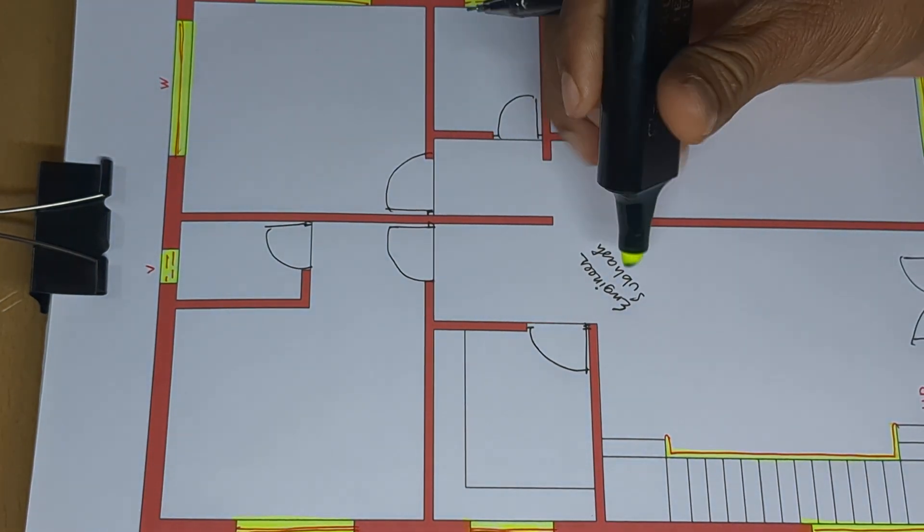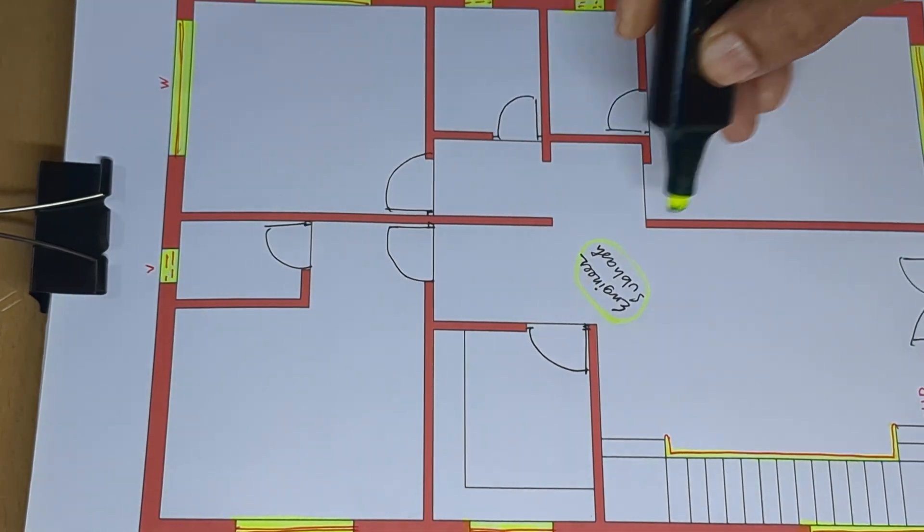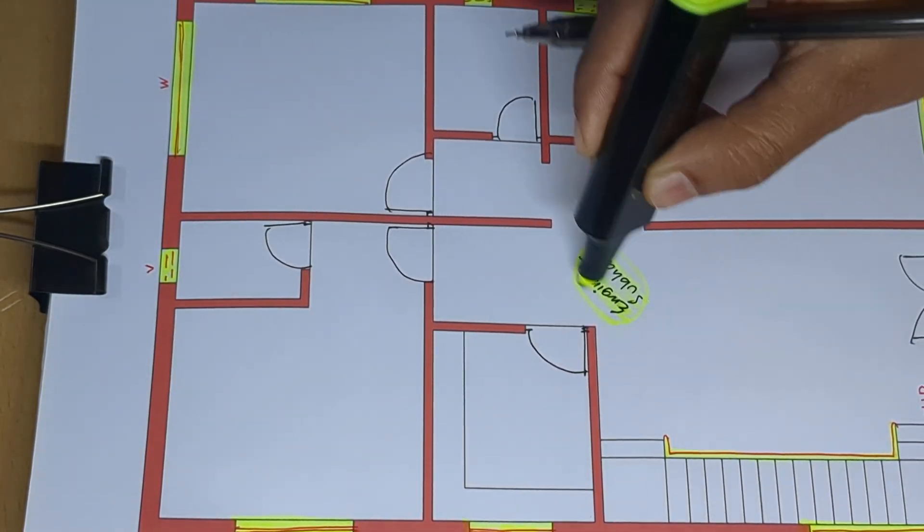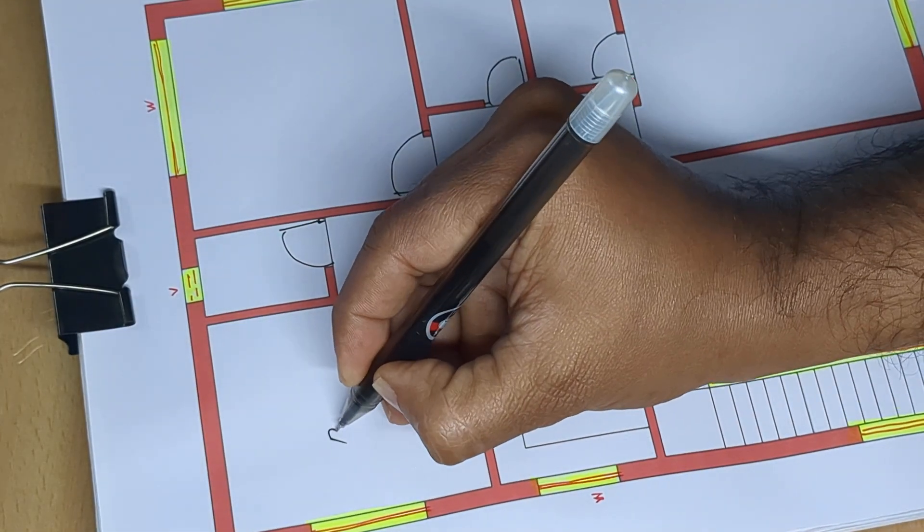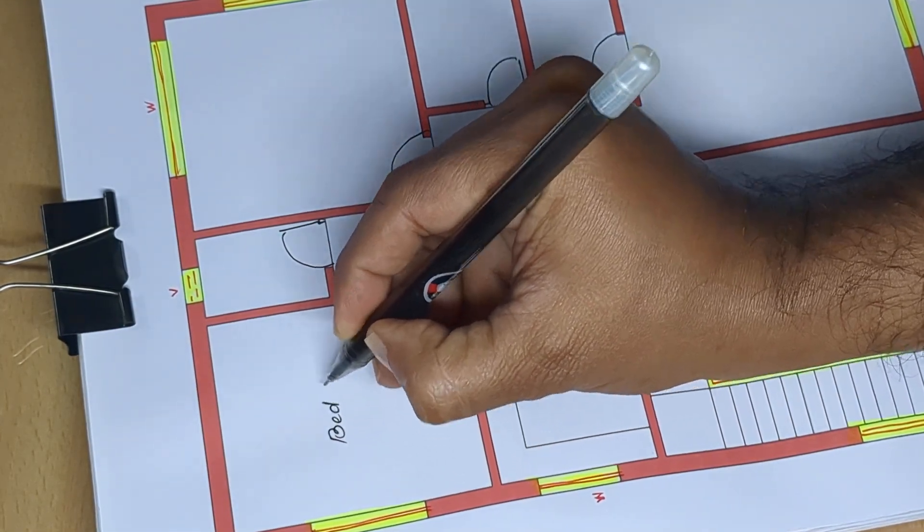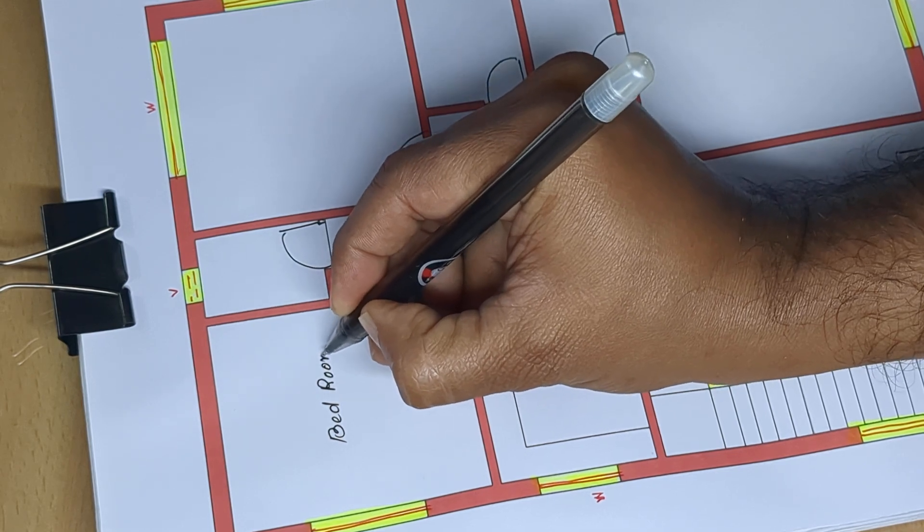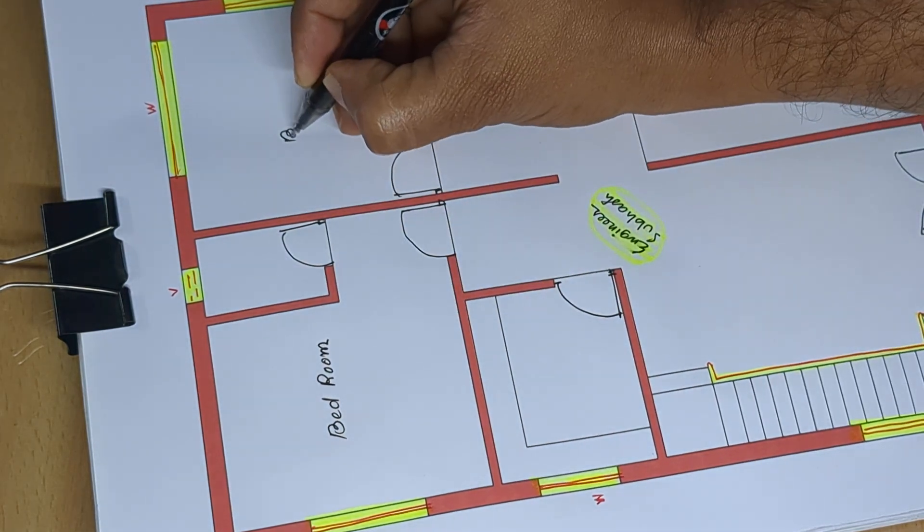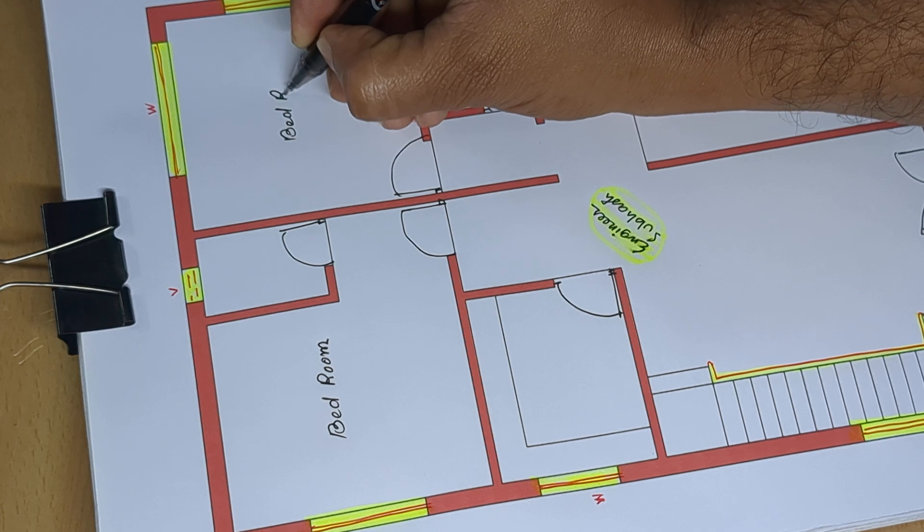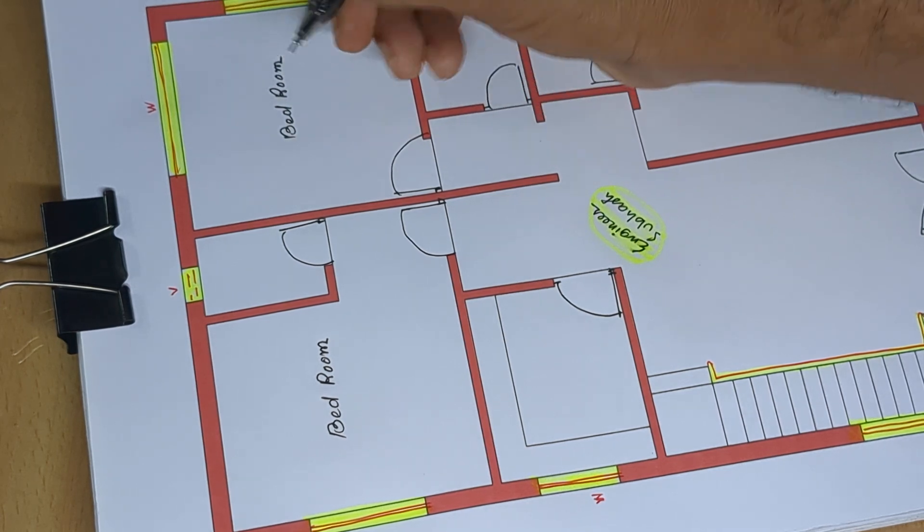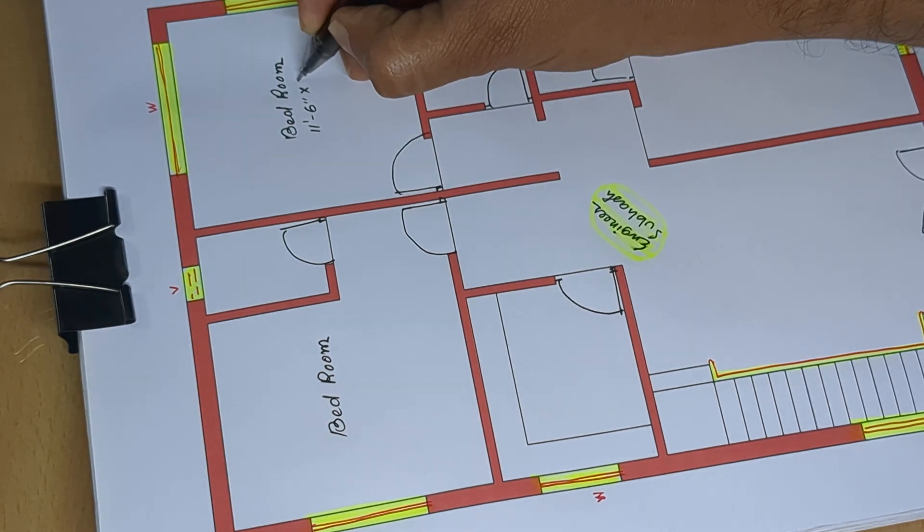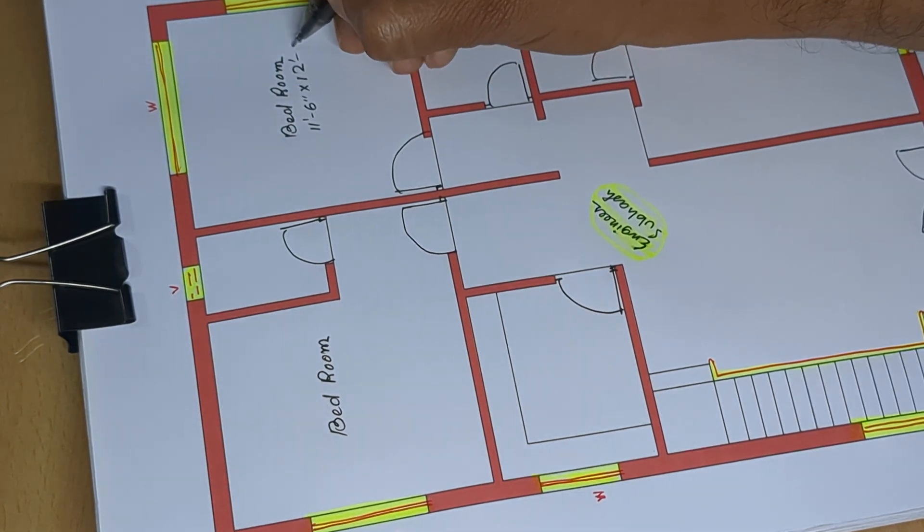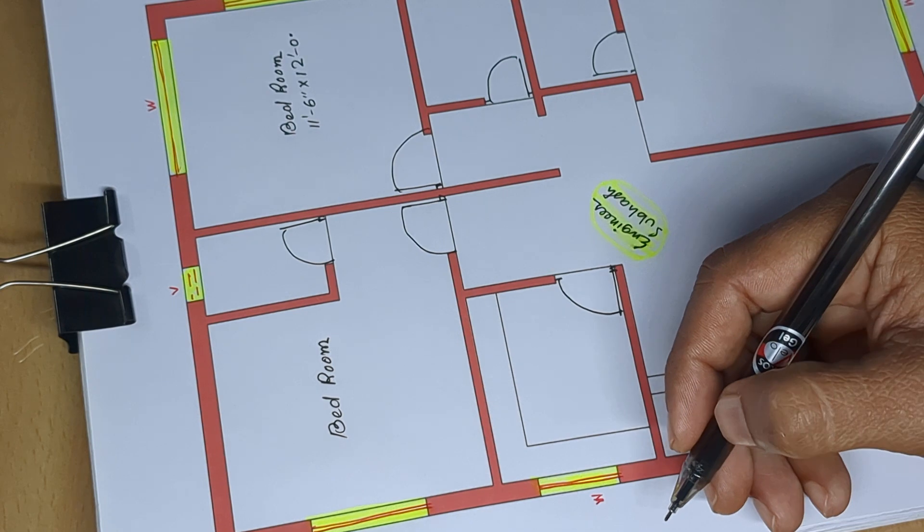First bedroom: 11 feet 6 inches by 12 feet 0 inches. Next bedroom.